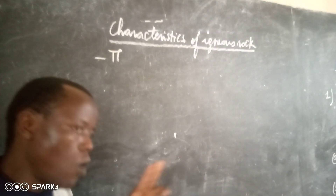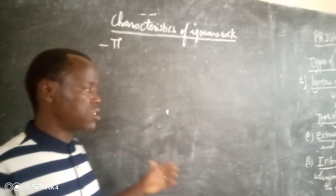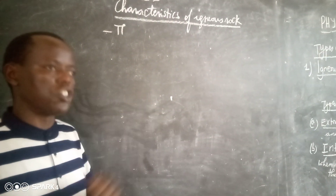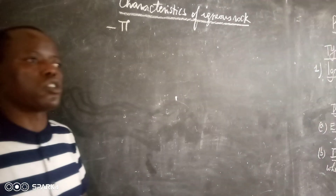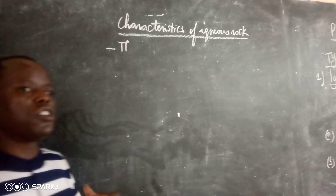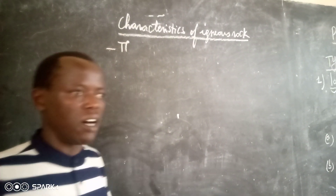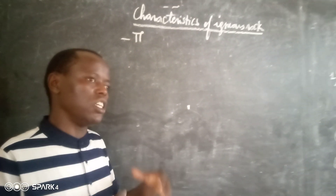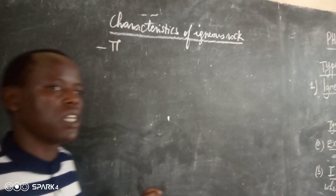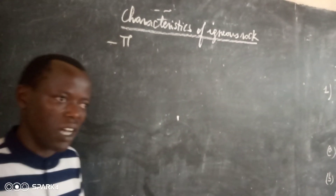Remember, we saw that in intrusive igneous rock, we have also two categories. We have hypabyssal igneous rock and plutonic igneous rock. Hypabyssal igneous rock is formed when magma cools and solidifies inside of the earth crust but near the earth surface. Plutonic igneous rock is formed when magma cools and solidifies inside of the earth crust but deep, not near the earth surface.